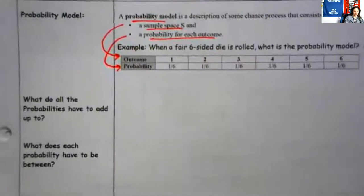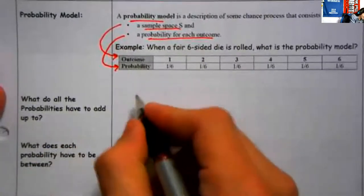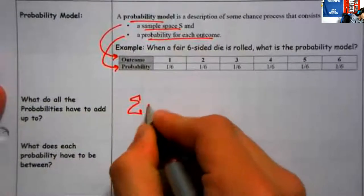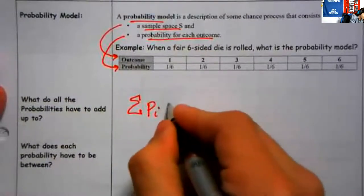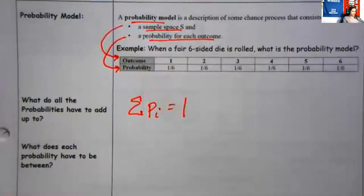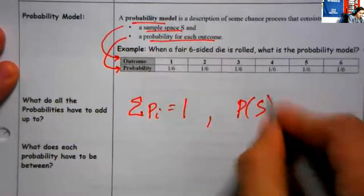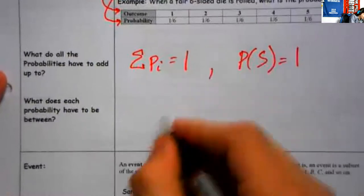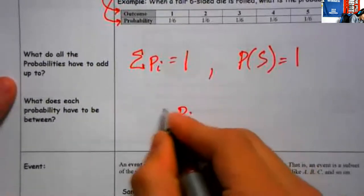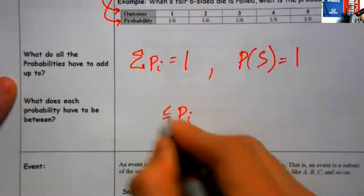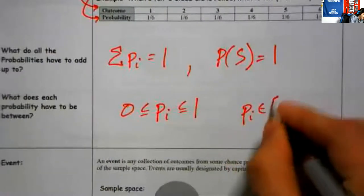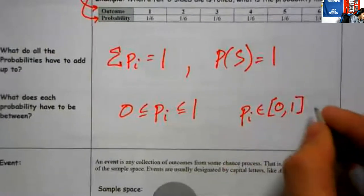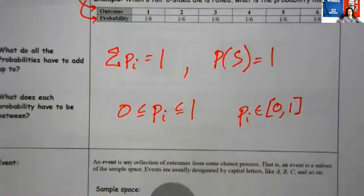A couple of rules for probability models. The sum of all those probabilities has got to be one — the probability of something in the sample space happening is one; something's going to happen. And all those individual probabilities, all those P_i's, have to be between zero and one. We might also say P_i is an element of the interval from zero to one, for all i. They have to be between zero and one, and they have to add up to one.